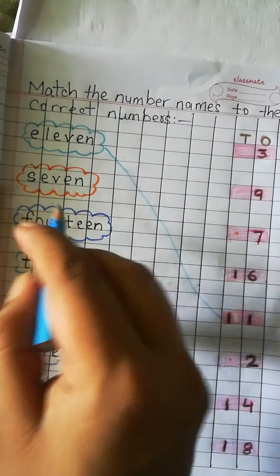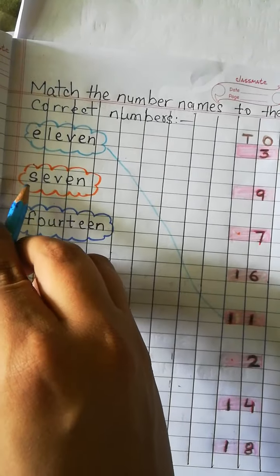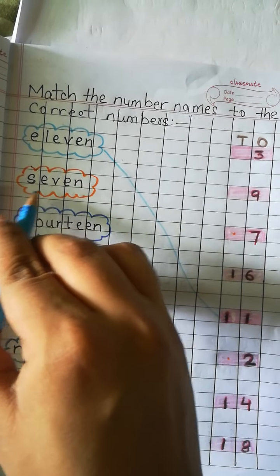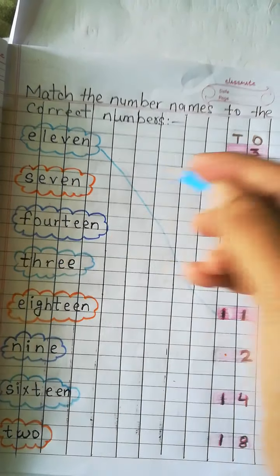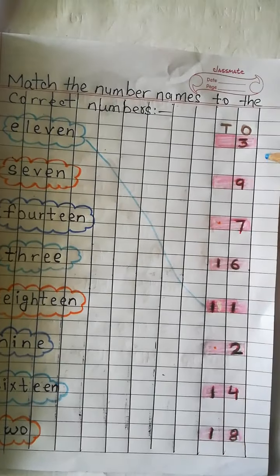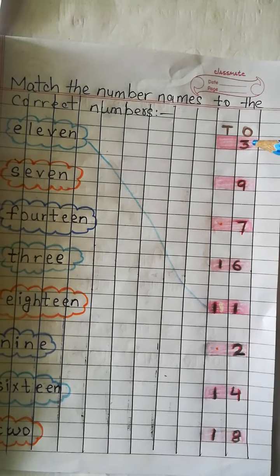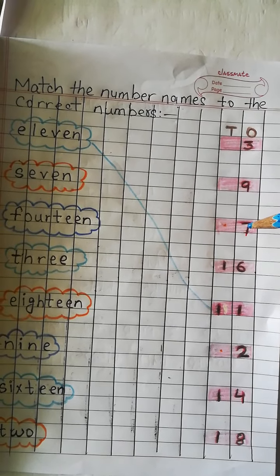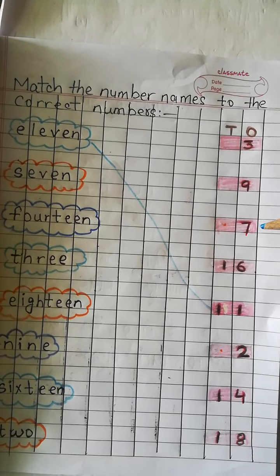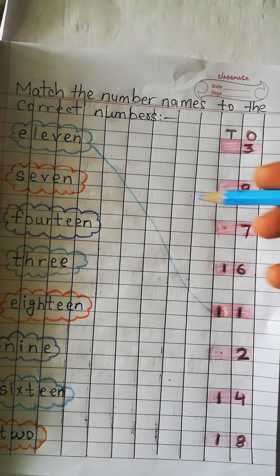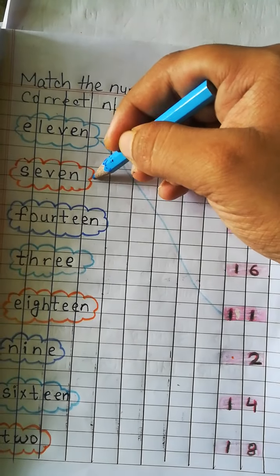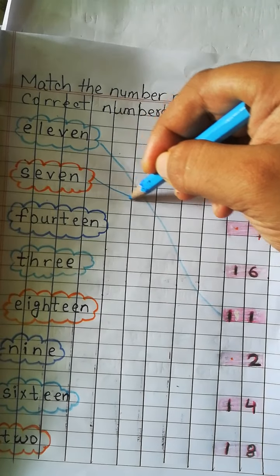Now, SEVEN — S-E-V-E-N. So we will find number 7. Number 3, number 9, and number 7. So we will match.